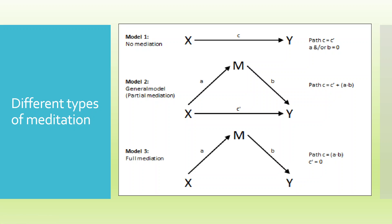There can be different types of mediation. The first is no mediation — the child takes approval from the father directly, and the total effect equals C only. The second possibility is that the child approaches the father directly and also takes the route through the mother, so the total effect is C dash plus A times B. The third possibility is that the child can never get approval directly from the father and must always take the route through the mother — that is A times B, an indirect effect only.